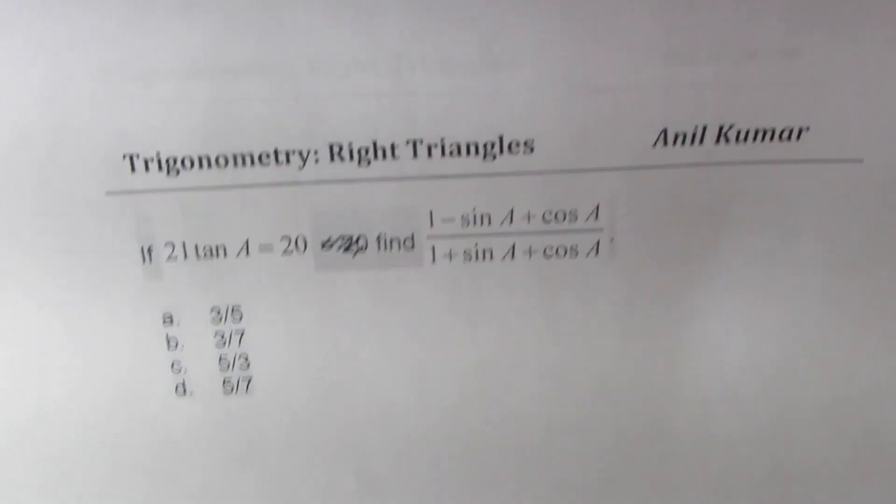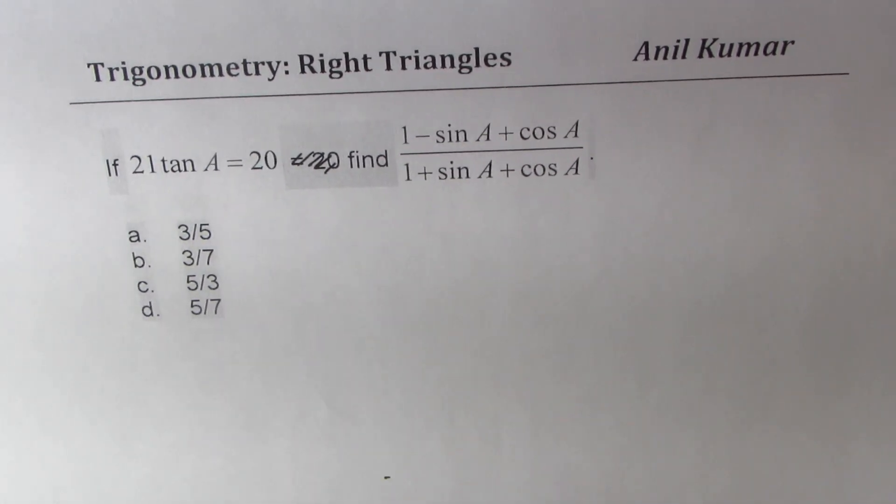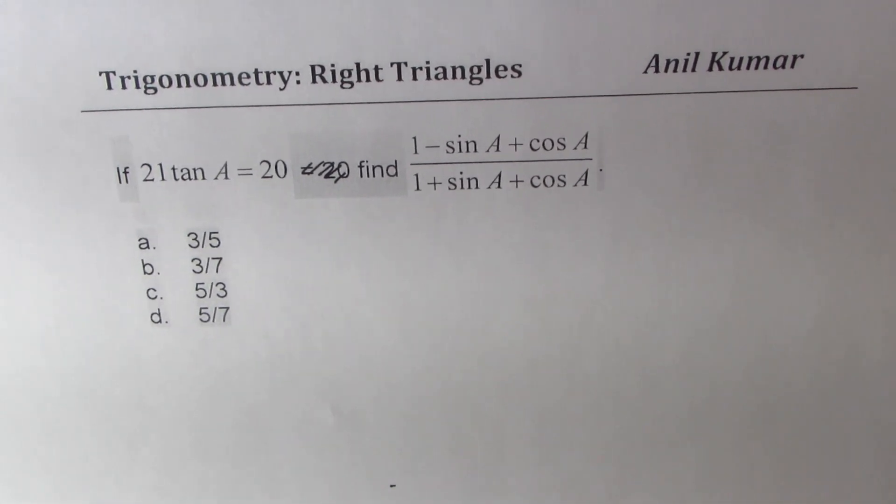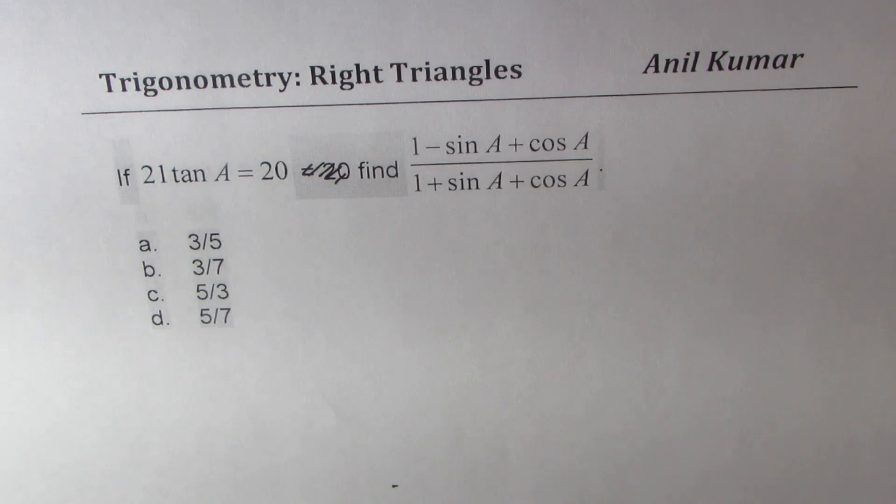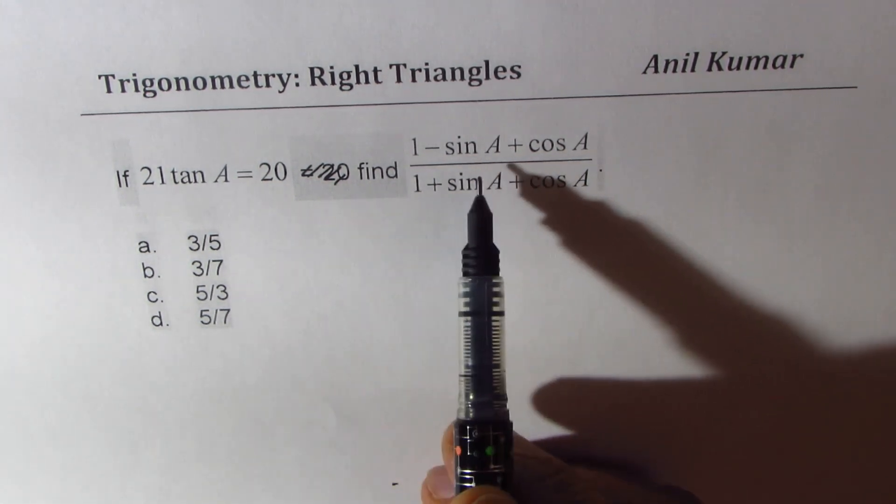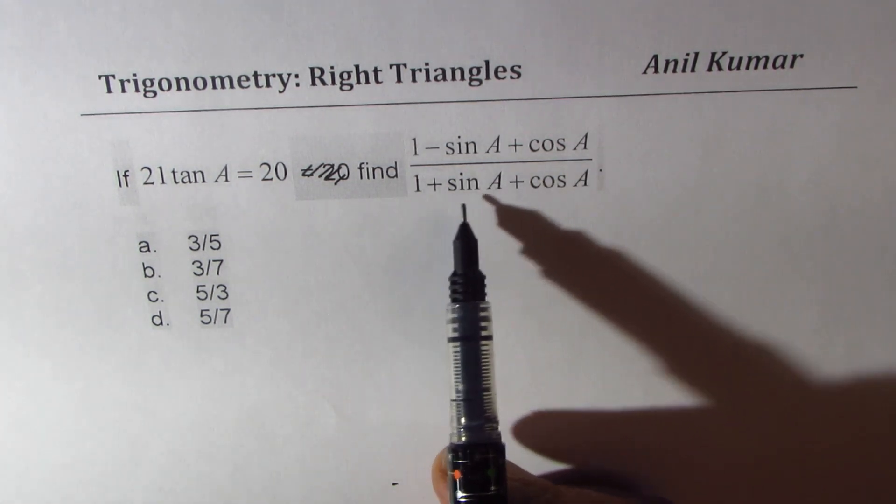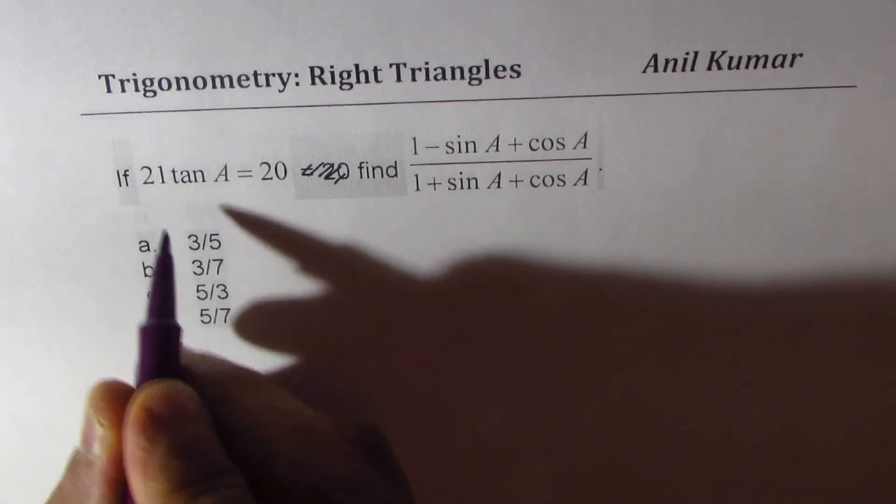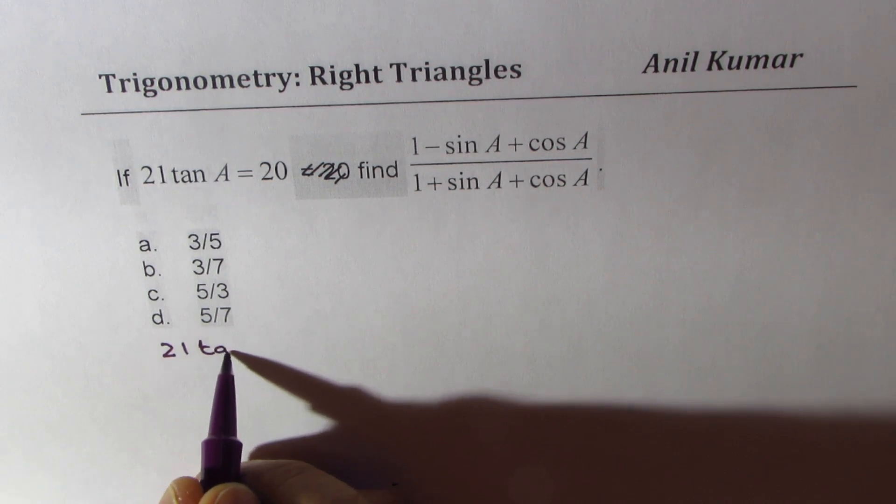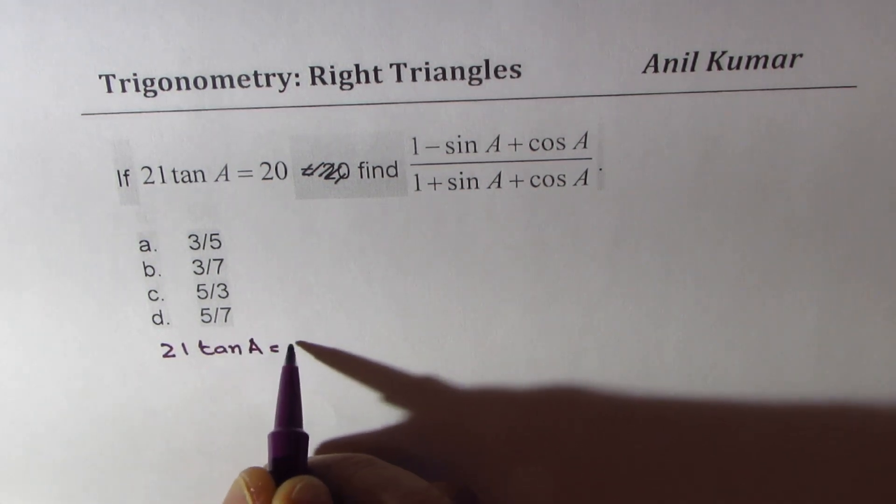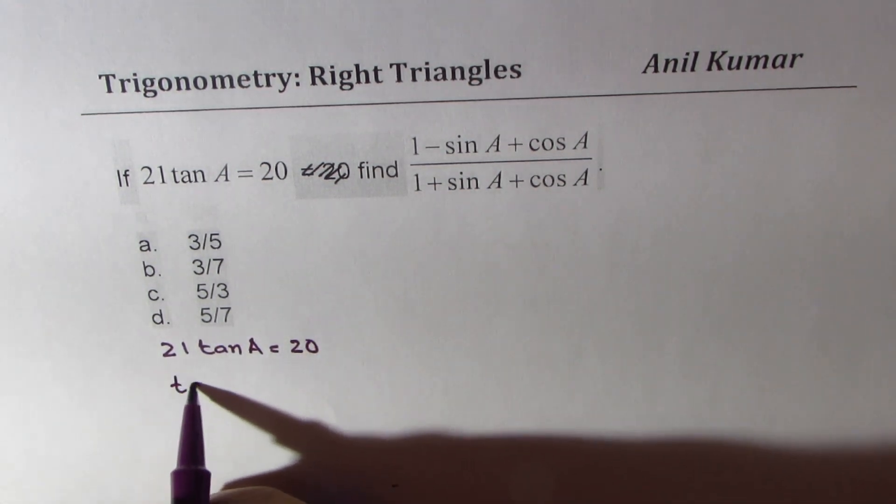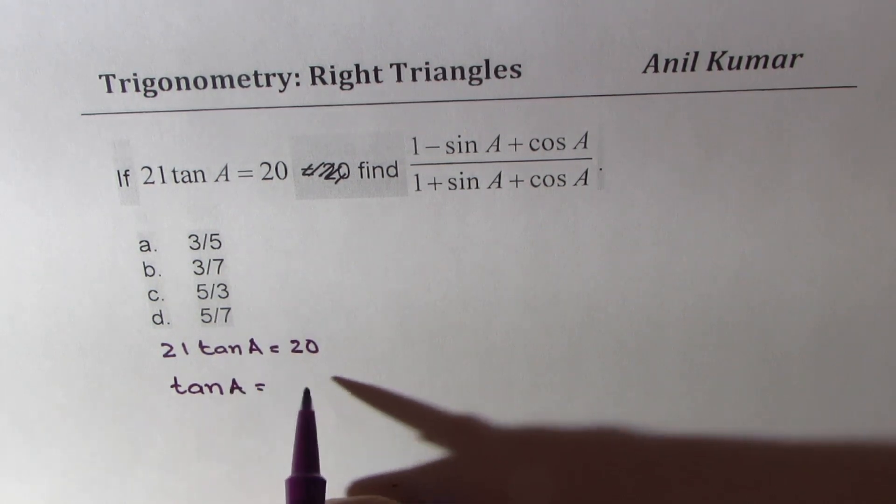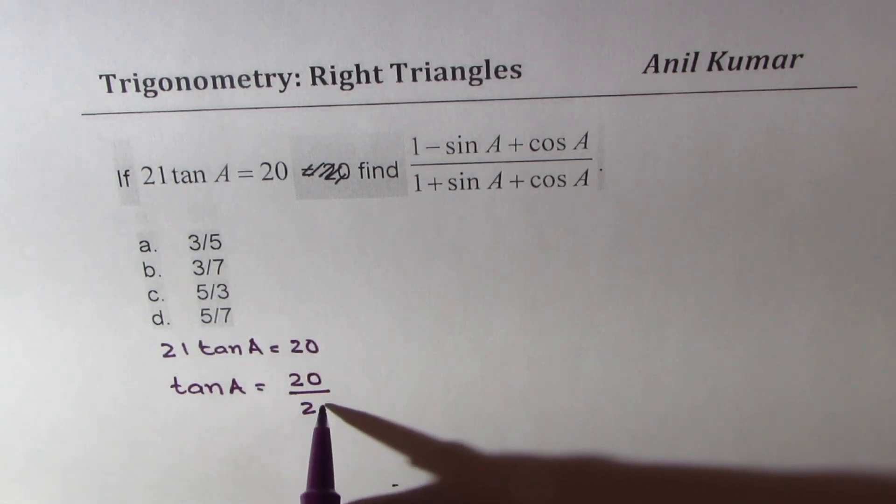So we'll begin with the very first one which is 21 tan A equals 20. Find (1 - sin A + cos A) divided by (1 + sin A + cos A). Now if 21 tan A equals 20, that means tan A is 20 divided by 21.